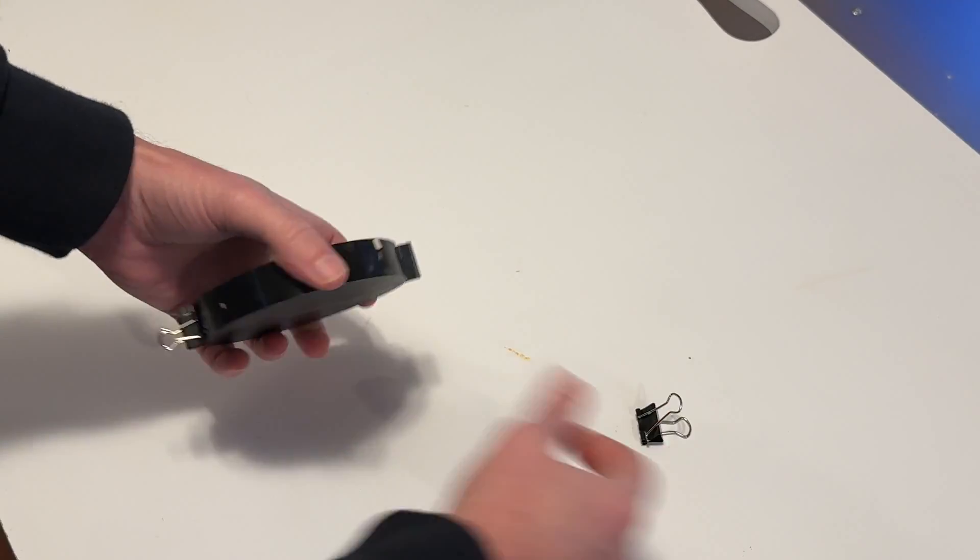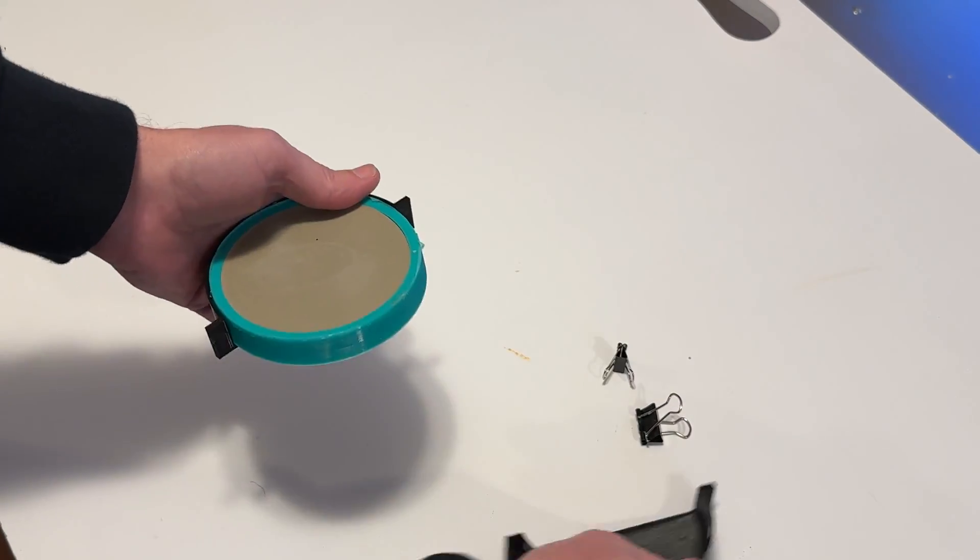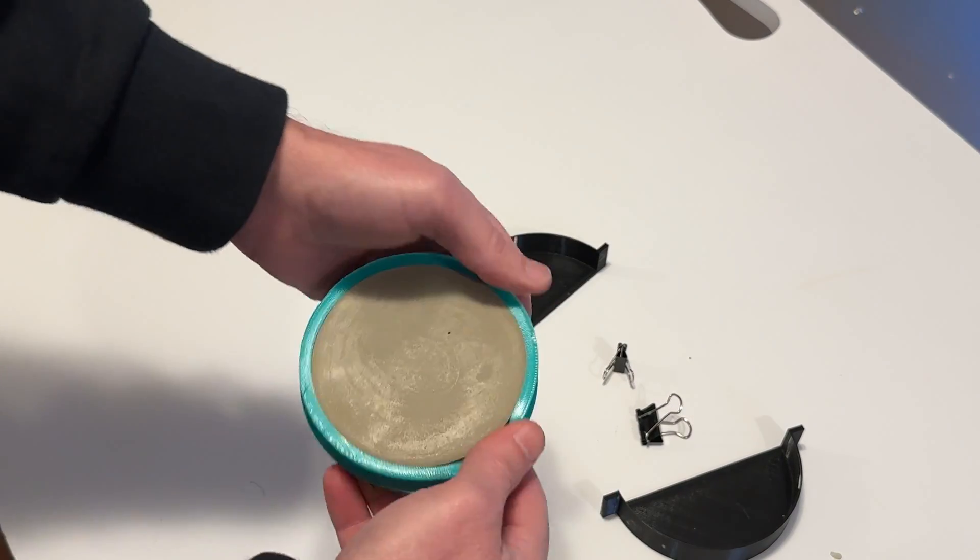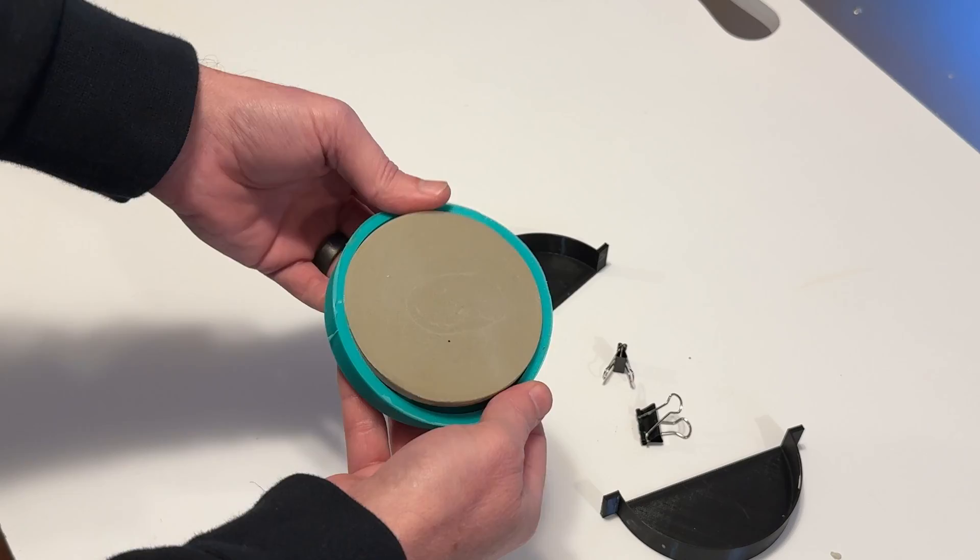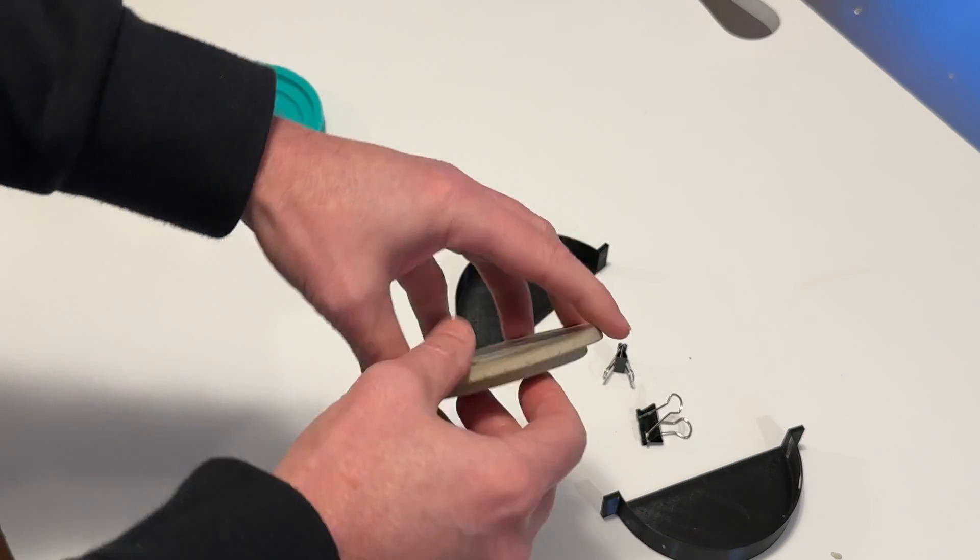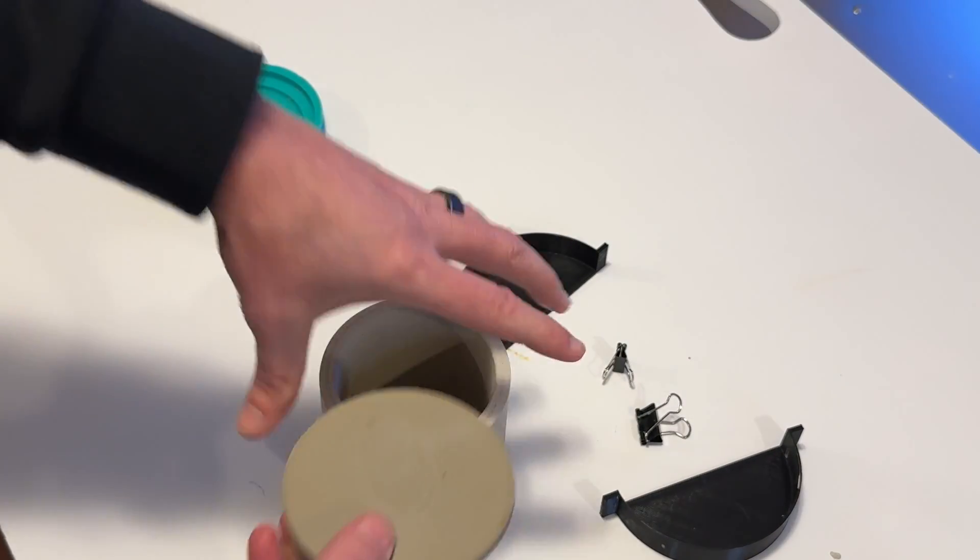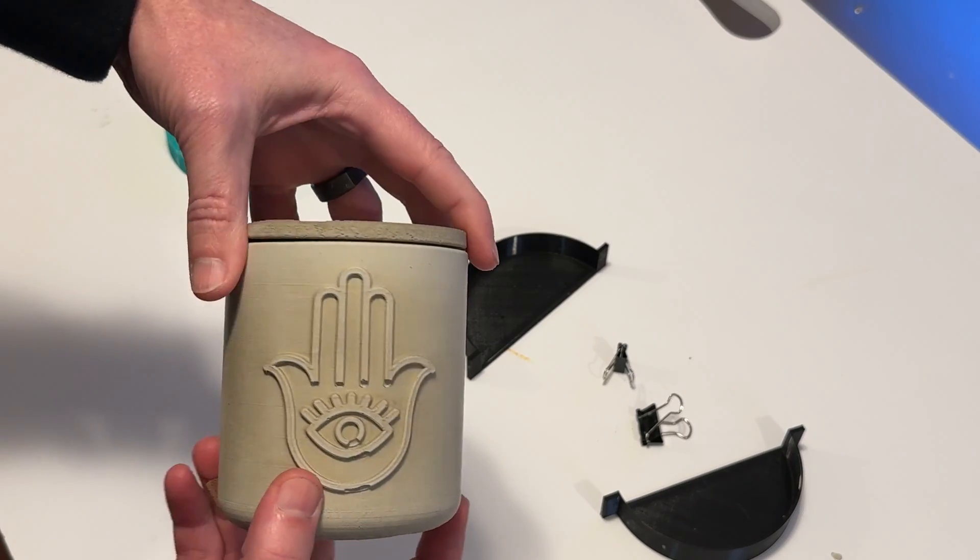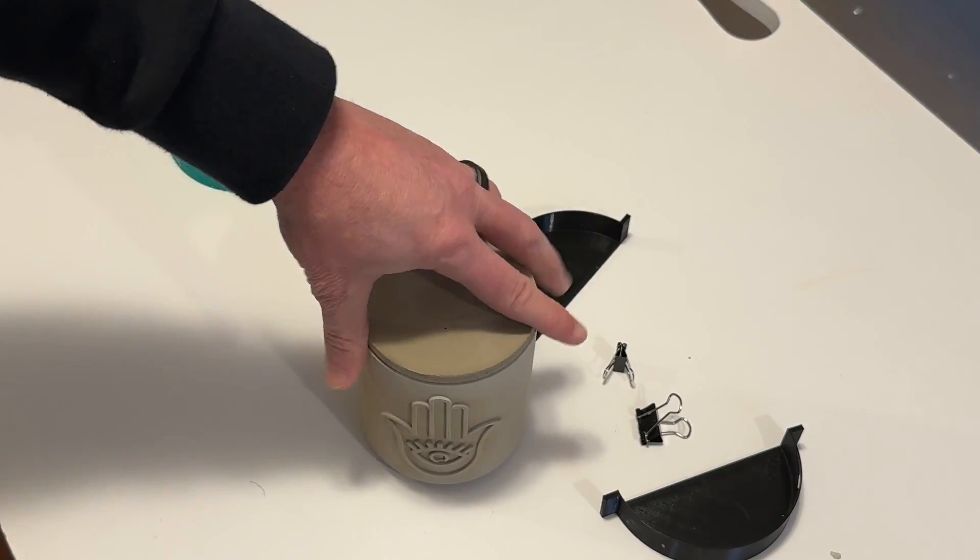And the demolding on these open face molds is super simple. You'll see it takes five seconds to pull it out. It's a nice clean lid for the candle vessel. Pretty easy.